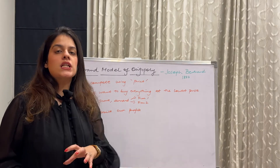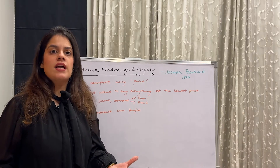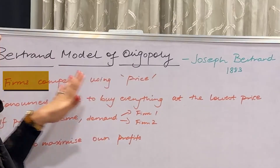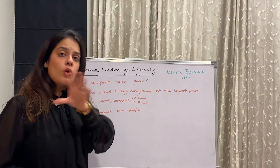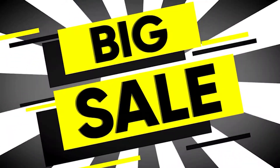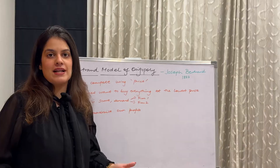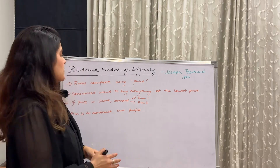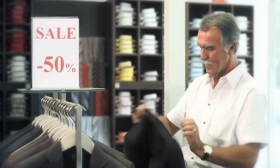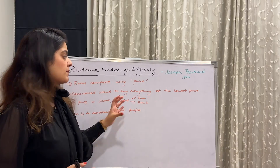In Cournot's model, firms compete on quantity, and in Stackelberg's model there is a first-mover advantage. But in Bertrand's model, firms compete using price. Both firms try to lower their price to capture the market — consumers are attracted to whoever offers the lower price. If prices are the same, demand is equally split between the two firms. The firm's aim is to maximize its own profits.